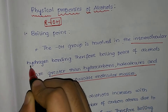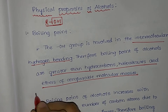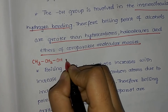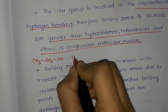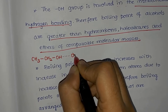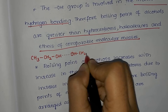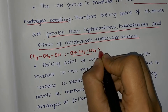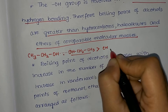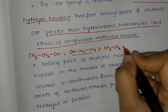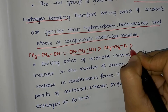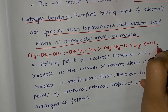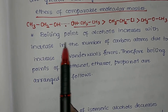Let us consider the intermolecular hydrogen bonding in alcohol using the example of ethanol, CH₃CH₂OH. The hydrogen of one ethanol molecule is bonded to the oxygen of another ethanol molecule — shown by a dotted line representing intermolecular hydrogen bonding. This gives ethanol a greater boiling point than chloroethane of comparable mass, and chloroethane has a greater boiling point than dimethyl ether. The molecular masses of these three are almost similar.